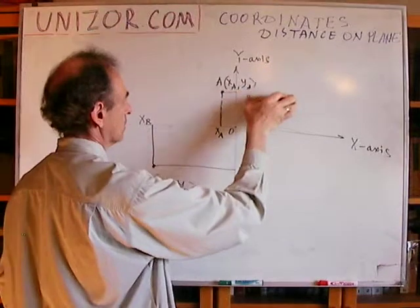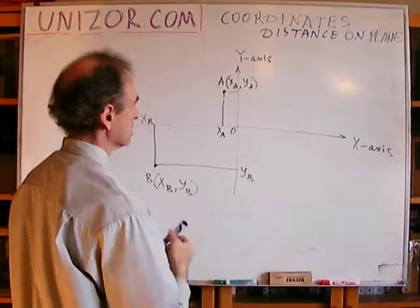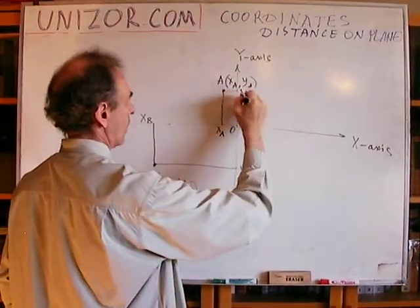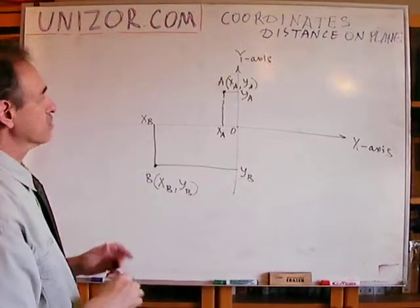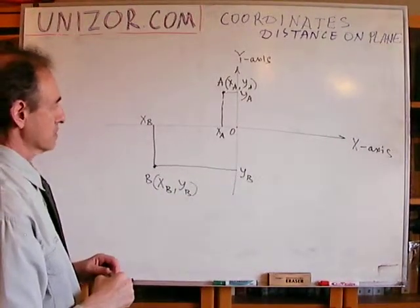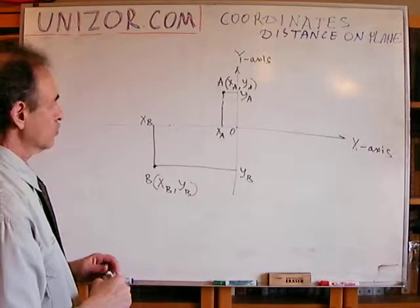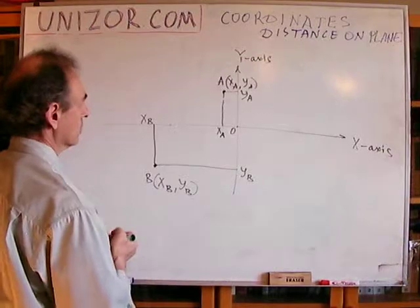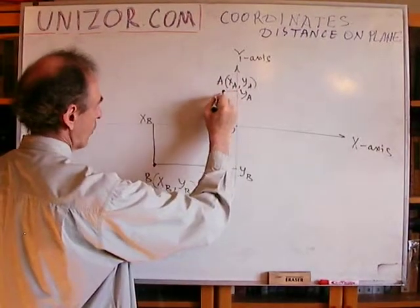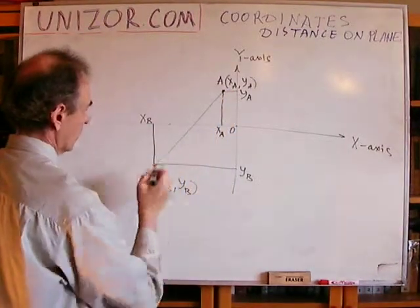Oh, wait a minute. This is y_a. Okay. So that's the picture which I would like to start with. Two points. Each one has certain coordinates. Now, the distance between them, the distance between this point and this point.